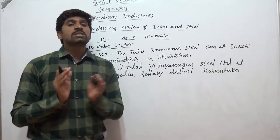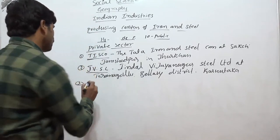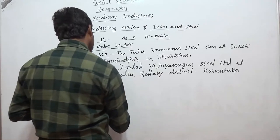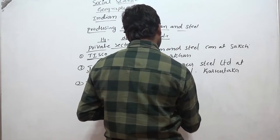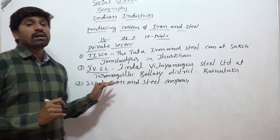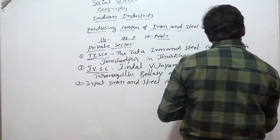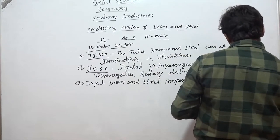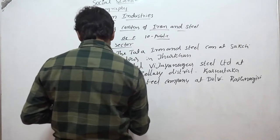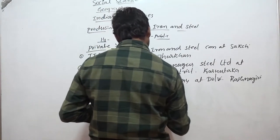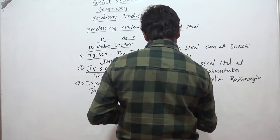The third private sector industry is Ispath Iron and Steel Limited at Dolvi, Ratnagiri district in Maharashtra.